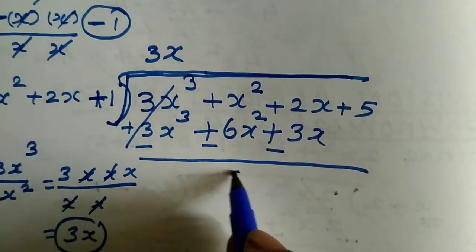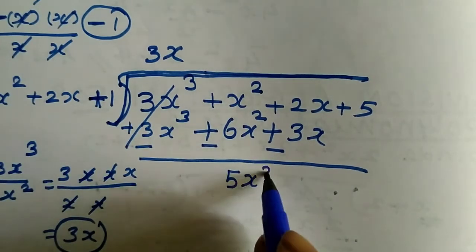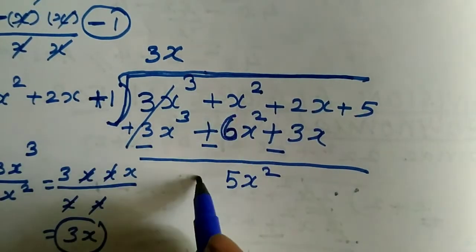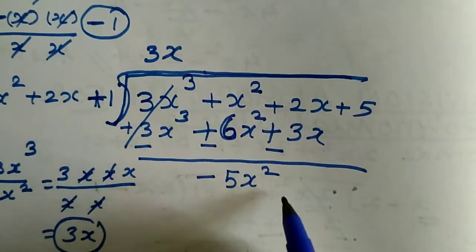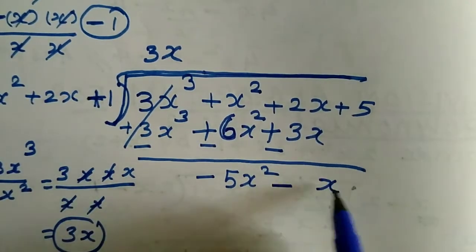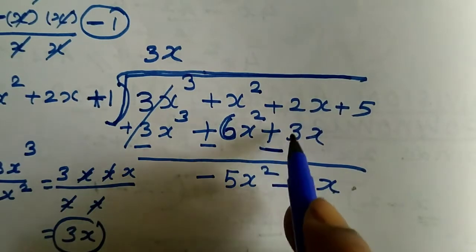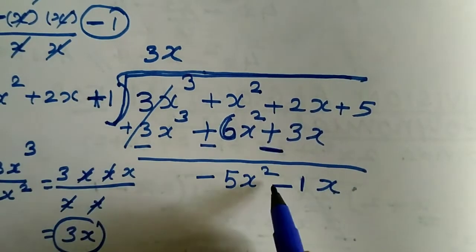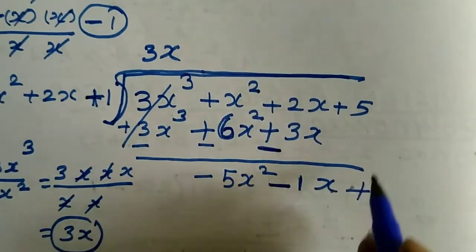Plus 3x³ minus 3x³ cancel out. When subtracting, take the sign of the greater number. x² minus 6x² gives -5x², and we bring down 2x and +5.